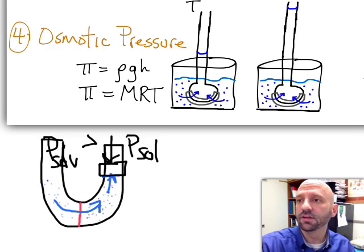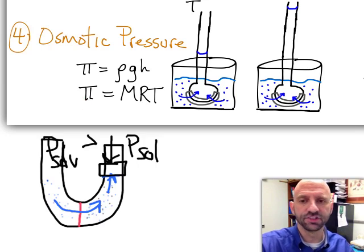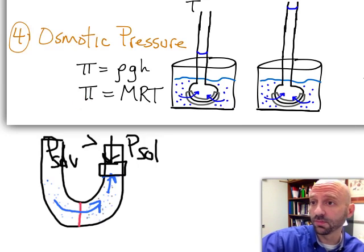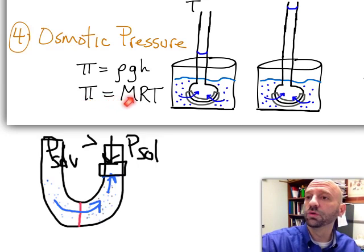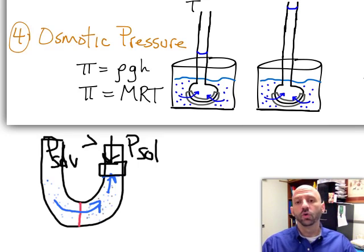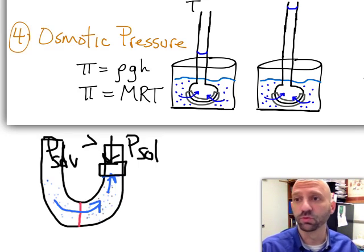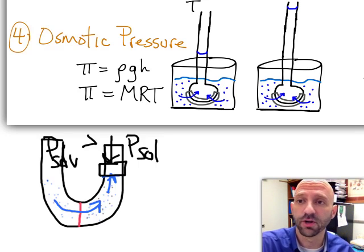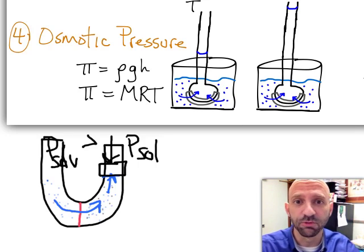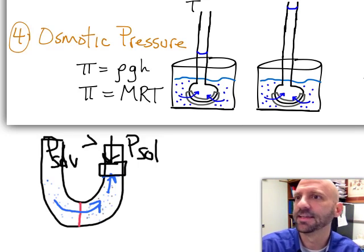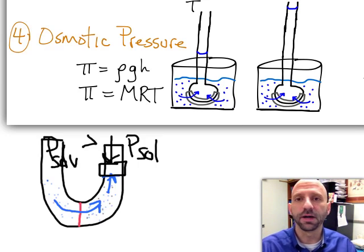So we have here pi. It's not the number pi. Pi is just the symbol we use for osmotic pressure. Pi equals MRT. Or as I like to say, osmotic pressure equals Mr. T. I pity the fool who doesn't understand osmotic pressure. I don't know if you'll get that reference. It's starting to get really dated at this point. All right. So pi equals Mr. T.